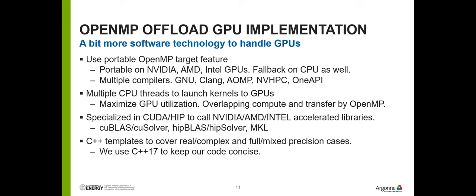OpenMP is an important component in the software stack used by QMCPACK. At a higher level, QMCPACK also relies on CPU threads talking to GPUs independently. In addition, QMCPACK relies on linear algebra, so we heavily rely on CUDA/HIP to talk to their corresponding linear algebra libraries, as well as Intel MKL. We try to minimize the source code we have and rely on C++ templates to handle real/complex and mixed-precision cases. We're very happy that C++ is evolving at a stable pace — we now rely on C++17.